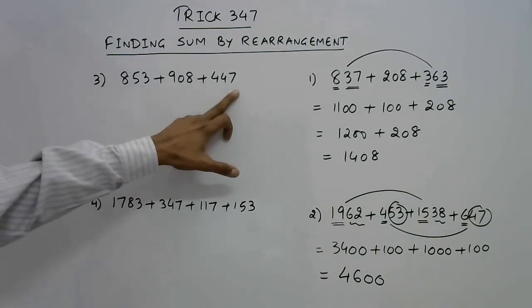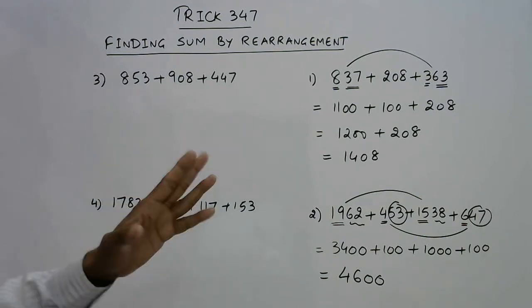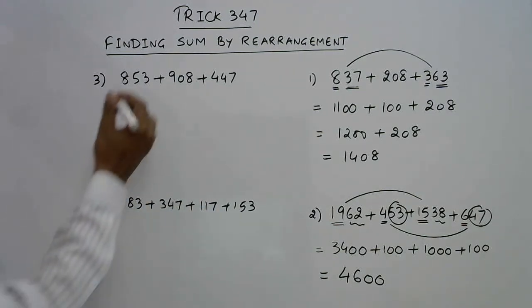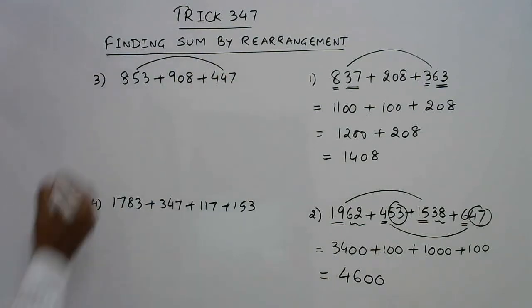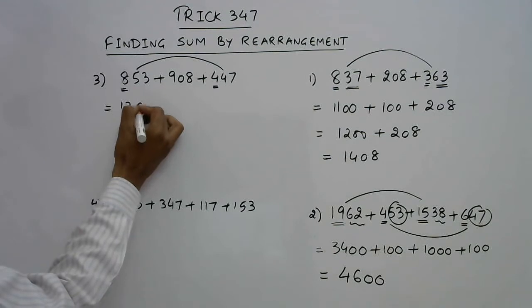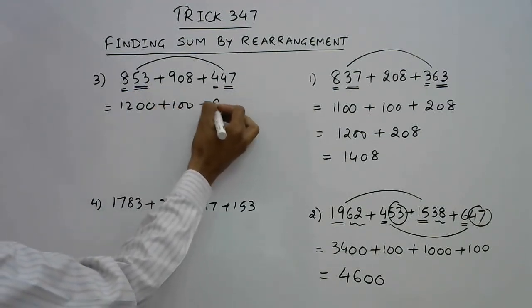Now you can spot very easily that 3 and 7 is 10, so we're getting a round figure here. I will be adding these two numbers. How to add these: 8 plus 4 is 1200, 53 plus 47 is 100, and 908 is the only number which remains.